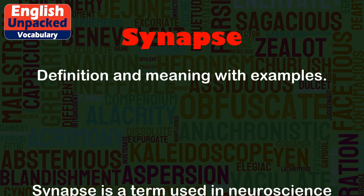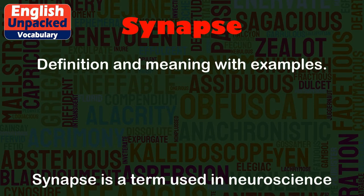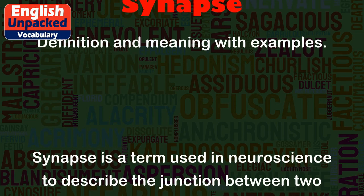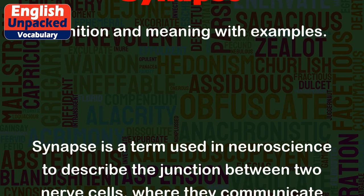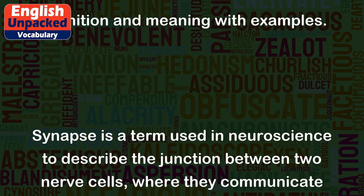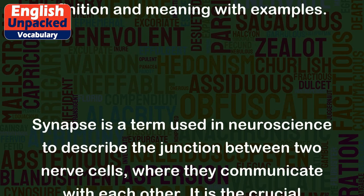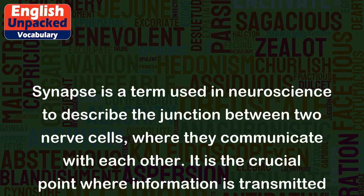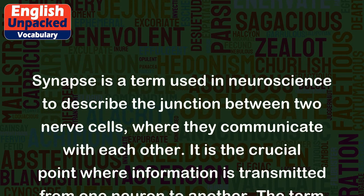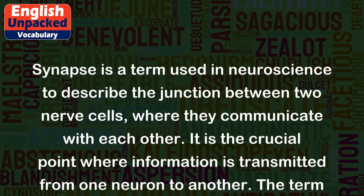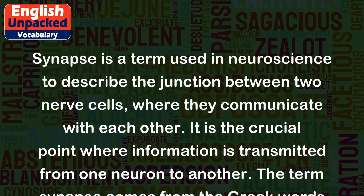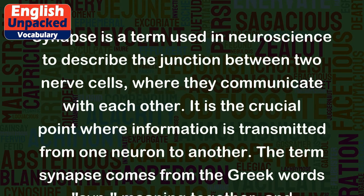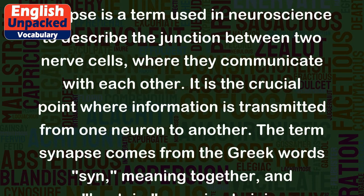Synapse is a term used in neuroscience to describe the junction between two nerve cells, where they communicate with each other. It is the crucial point where information is transmitted from one neuron to another.